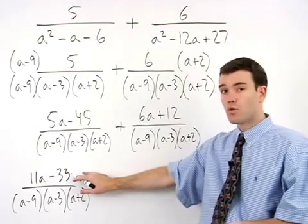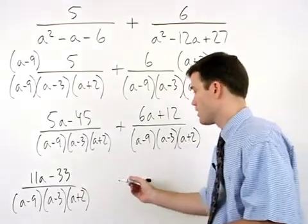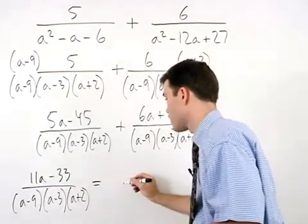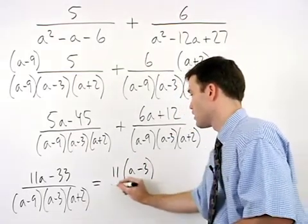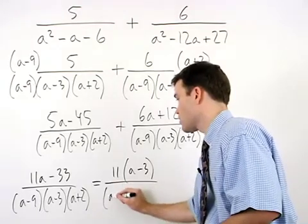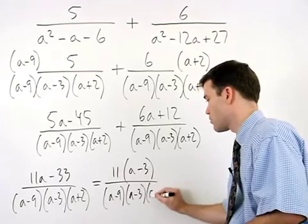In this case, notice that the numerator has a greatest common factor of 11, so we can factor an 11 out to get 11 times parentheses a minus 3 over a minus 9 times a minus 3 times a plus 2.